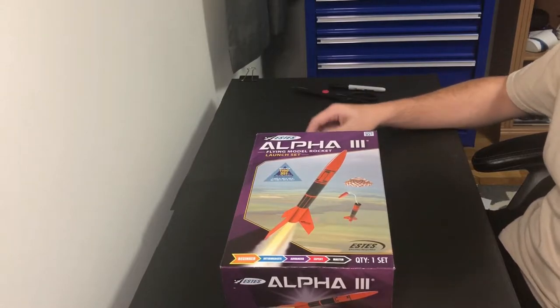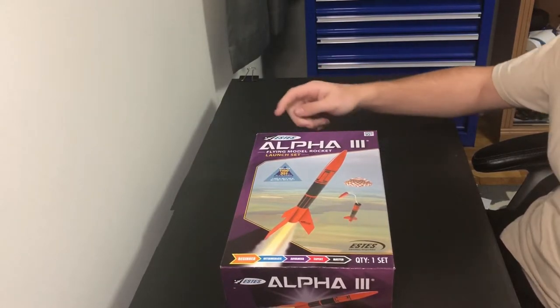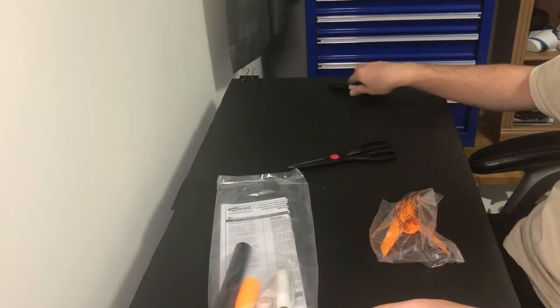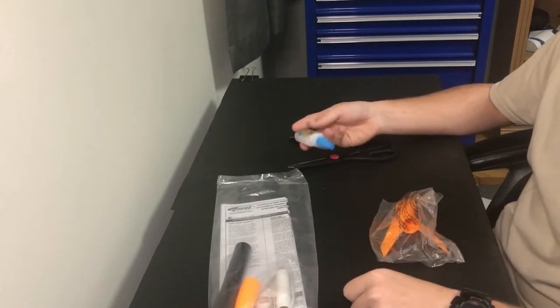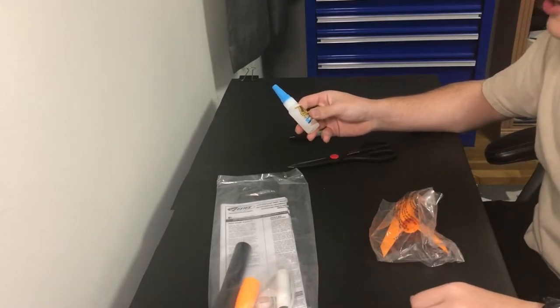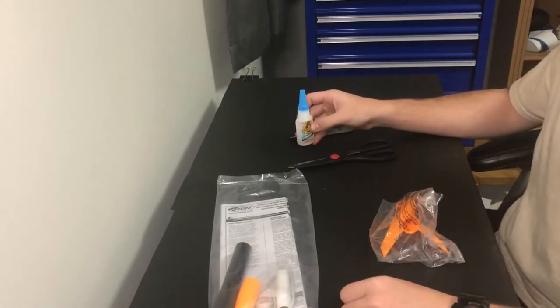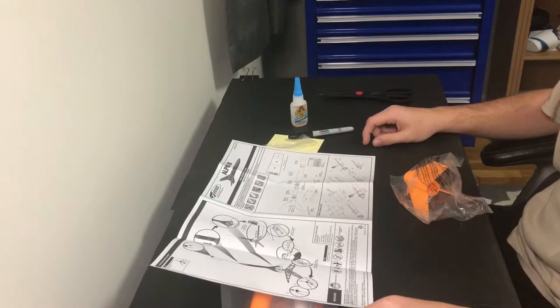Hello everybody that is interested in building the Alpha 3 rocket by Estes, let's get into building it. All you'll need is scissors, a pen, and some glue. I'm going to use super glue because it dries fast, but you can use any type of wood glue or any glue that sticks anything together. You will also need a ruler.